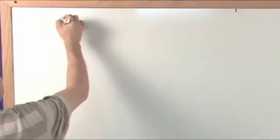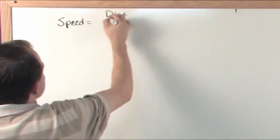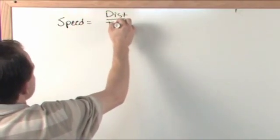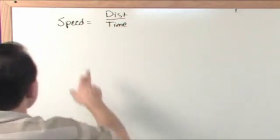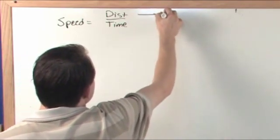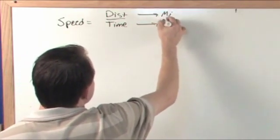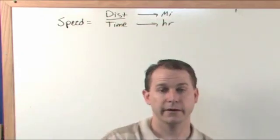Speed is equal to the distance traveled divided by the time. You don't even really have to remember this. Just think about your car: when you're going 60 miles an hour, you're going 60 miles—this would be miles—and this would be hours. The division means per, so when you say 30 miles per hour...